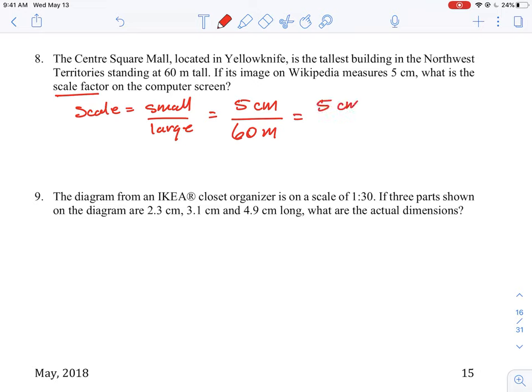So we can do 5 centimeters, but we would have to take 60 meters and times it by 100 centimeters per meter. That gets rid of our meters and gives us 5 over 6,000.